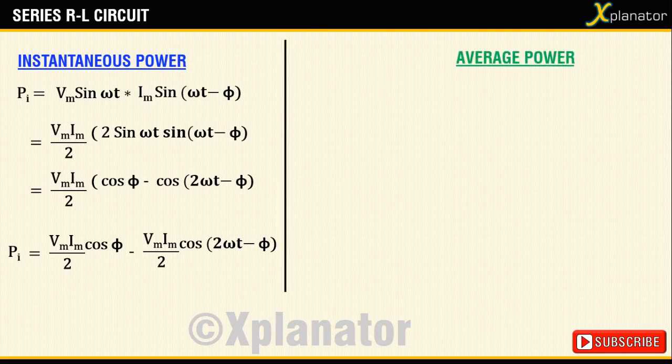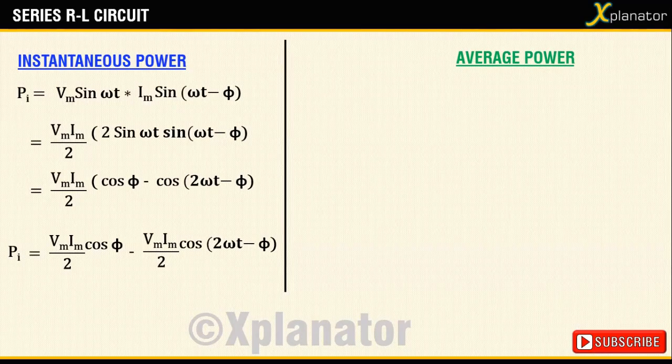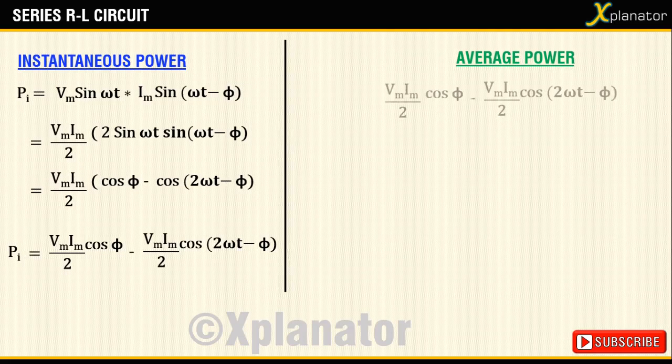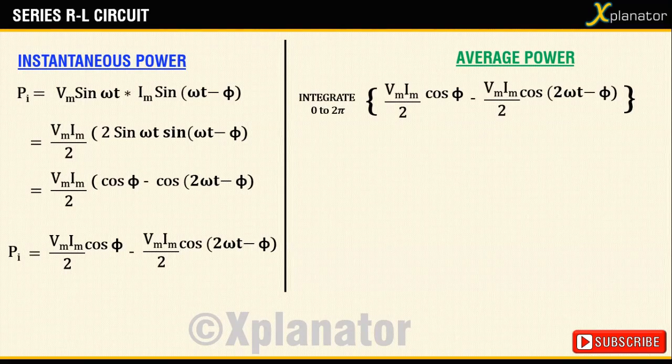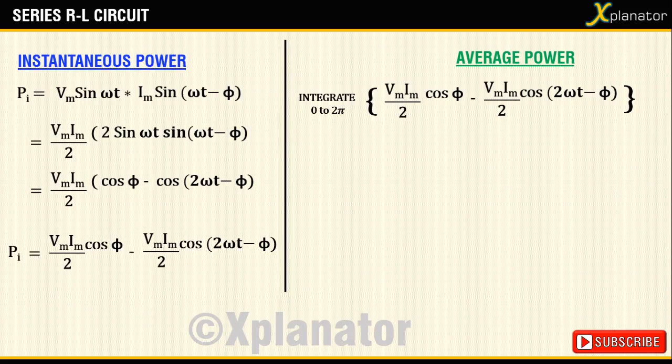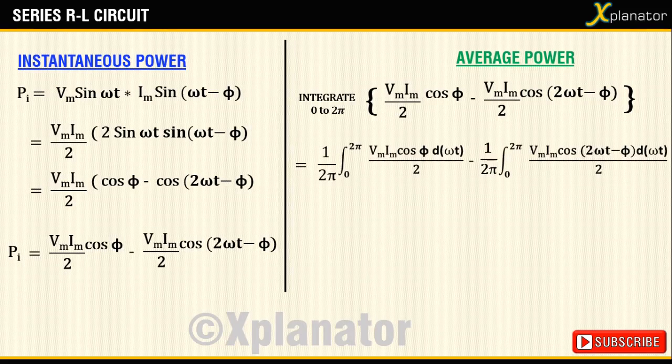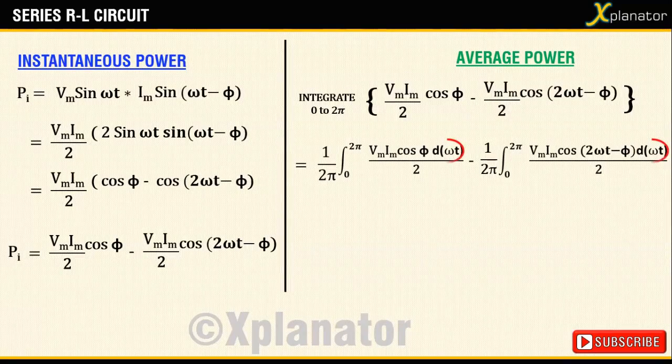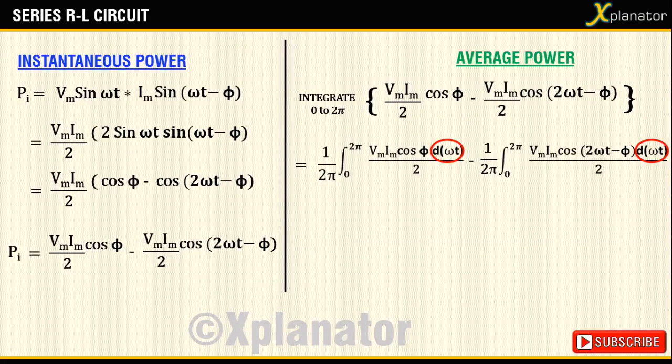Next, to find the average power, integrate the equation over the working cycle, that is from 0 to 2 pi, and divide it by the total time interval. The integration is carried out with respect to omega t. The first part of the equation has no omega t, so all terms are constant.